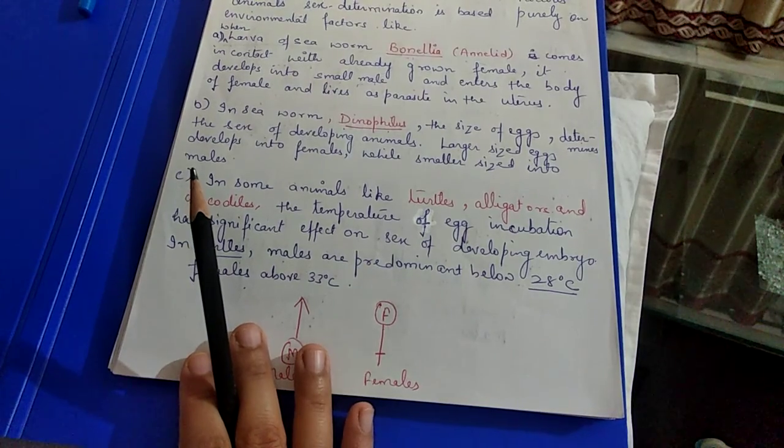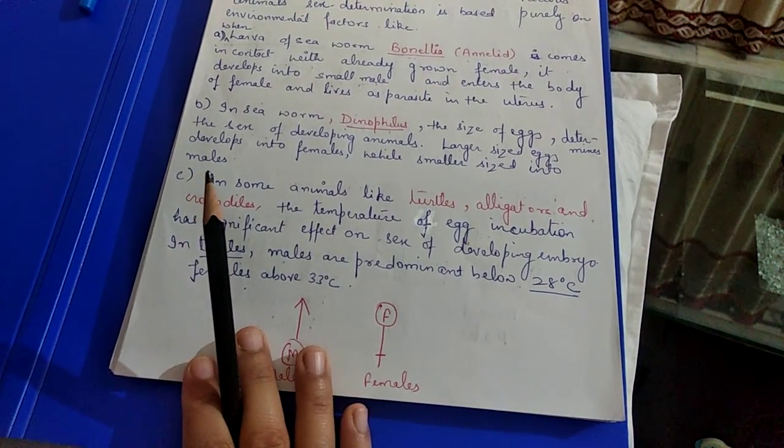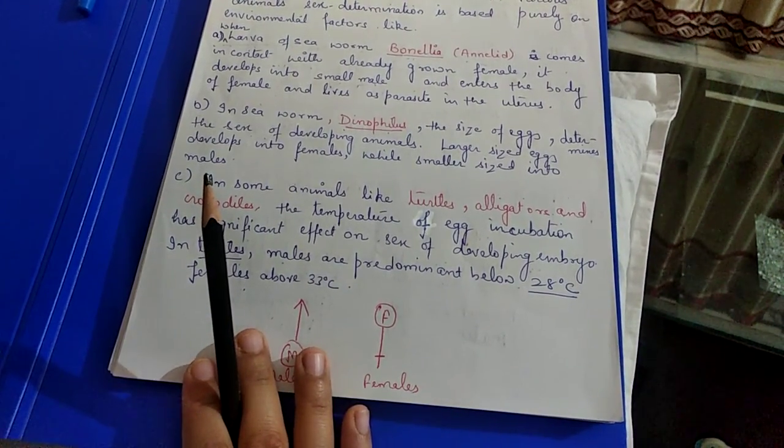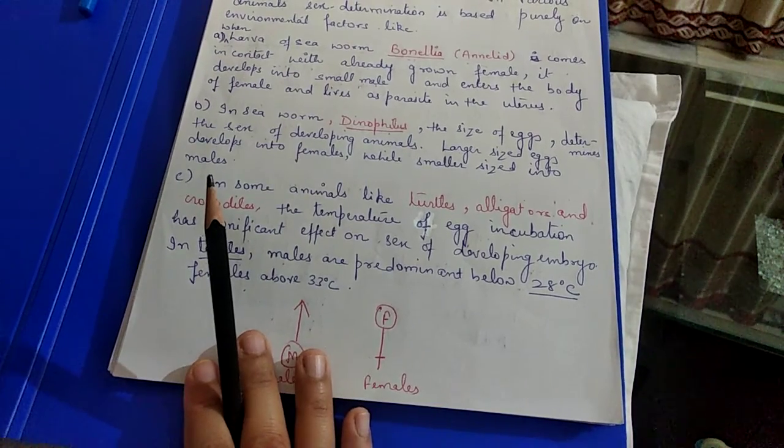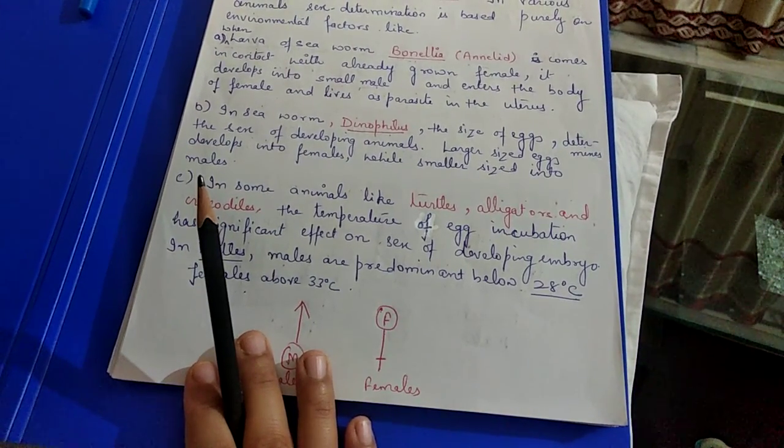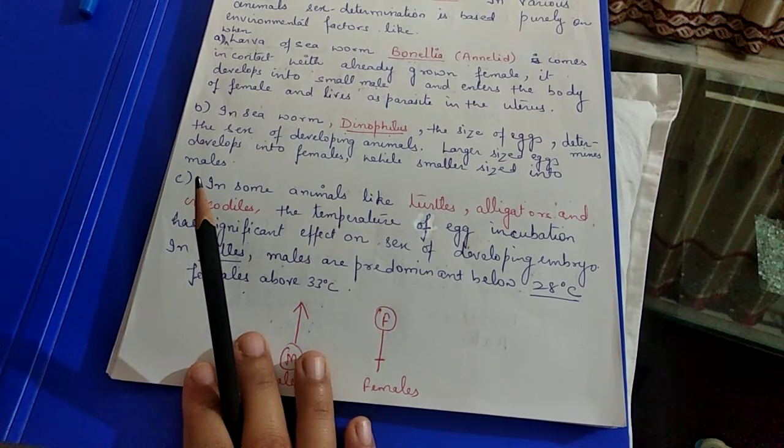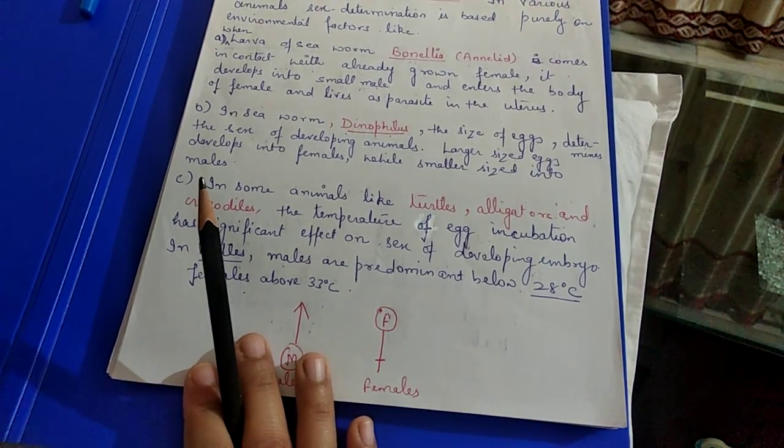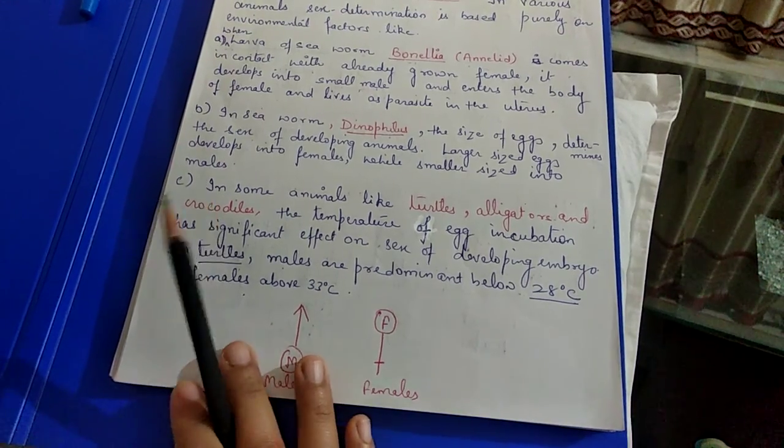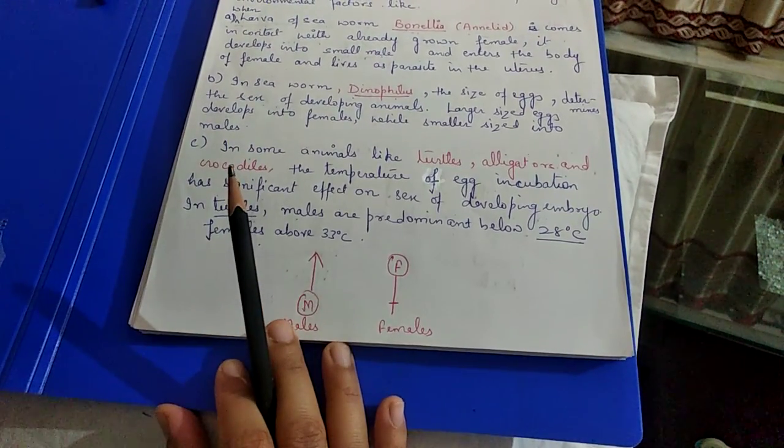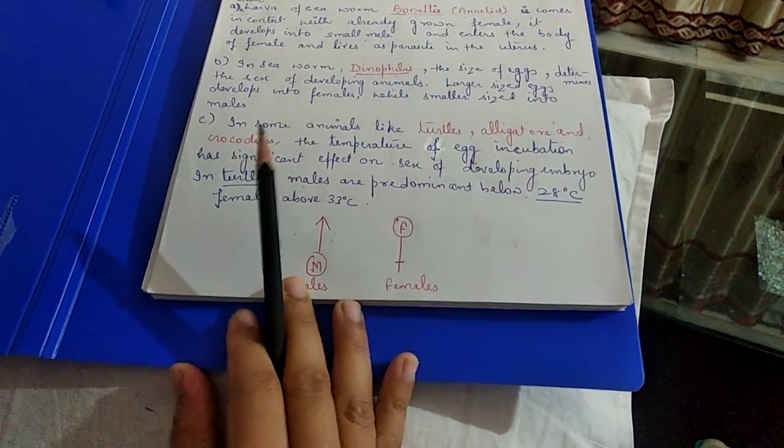We have one more example, Dinophilus sea worm. Here the egg's size determines whether the adult that develops will be male or female. Females lay larger size eggs which develop into females, and smaller size eggs develop into males.